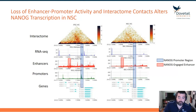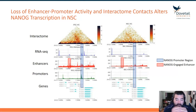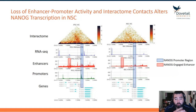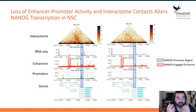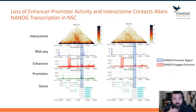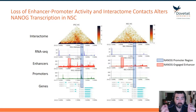What I want to point out first is that the interactome data and contact matrix show that in iPSC cells, there is an enrichment of contacts — we see more bright pixels in the region around NANOG — whereas in the NSC data, we're not seeing those contacts. Those contacts have pretty much been obliterated.